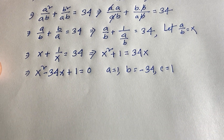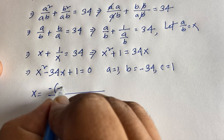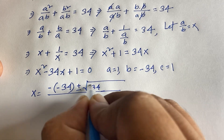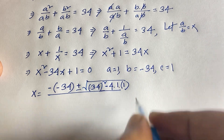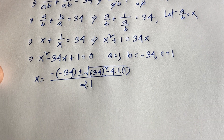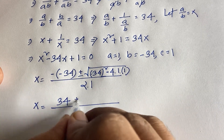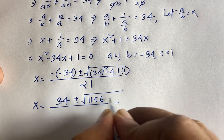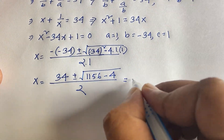Applying the quadratic formula: x equals minus b, which is minus(-34), plus or minus square root of b² minus 4ac. That is 34² minus 4×1×1, all over 2a, which is 2. So x equals 34 plus or minus square root of 1156 minus 4, which is 1152, over 2.